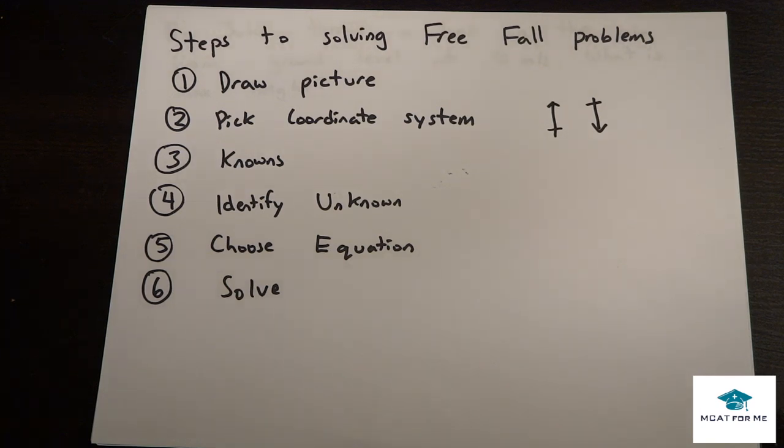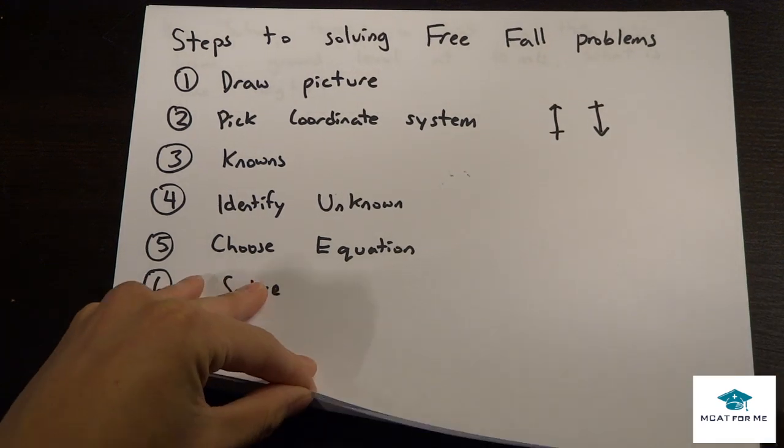Then the fourth one is identify the unknowns. Find out what do we need to find out. Also we need to find out what was not given so that we can choose an equation. And then the last step is just simply to solve it.